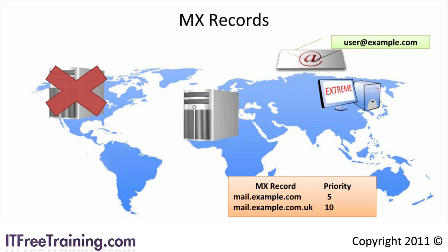Having backup email servers stops emails from being bounced back to the sender during long outages. The backup email servers do not have to be on other sides of the world — the same company may have multiple email servers at the same site. Remember, lower priority MX records will be tried first. Don't confuse priority with load balancing: if the server with the lowest priority is online, all email for that domain will be sent to that server.